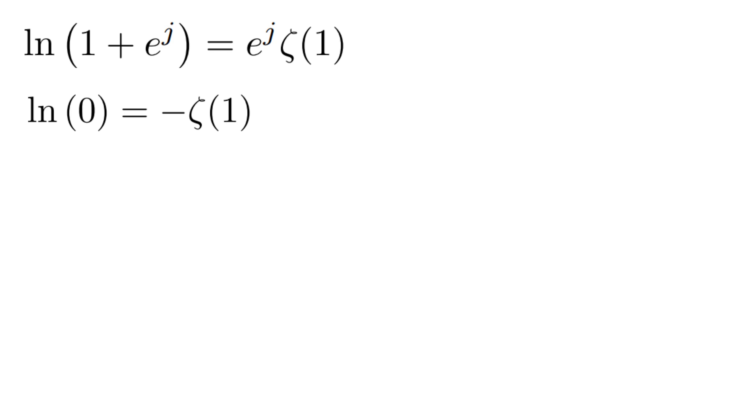This is a curious result because in traditional mathematics, the natural log of 0 is undefined. However, by using the properties of the virtual unit j and the Riemann zeta function, we are able to assign a meaningful value to this expression. To simplify further, let's take the inverse of both sides of this equation. This gives us the negative logarithm of 0 equals zeta of 1. If we rewrite this a little differently, we get the logarithm of 1 divided by 0 equals zeta of 1. This equation is starting to look a bit unusual, but it makes perfect sense within the context of our virtual unit j.